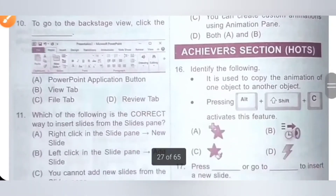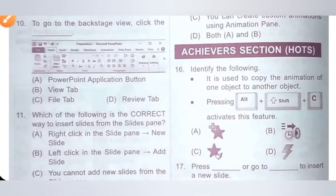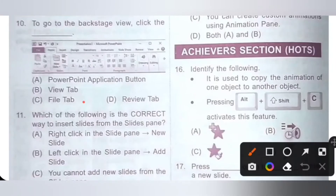Tenth one. To go to the backstage view, click the dash. Option A: PowerPoint application button. Option B: View tab. Option C: File tab. Option D: Review tab. To go to backstage view, you should click on the File tab. Option C is the correct answer.